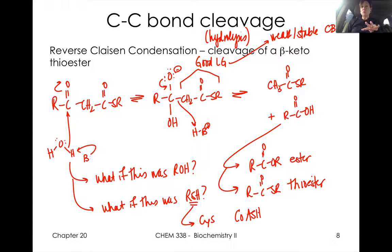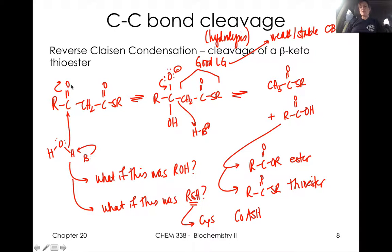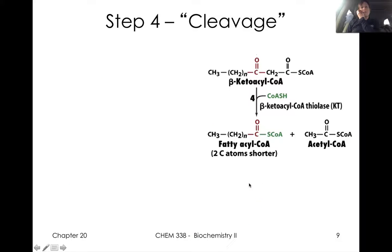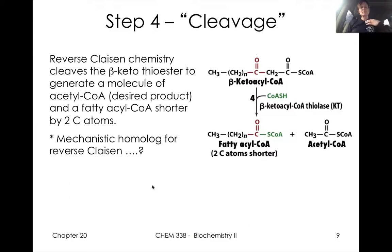We'll spend a good bit of time on this fourth step — this carbon-carbon bond cleavage — which is kind of new chemistry that we haven't seen before. We're going to review the mechanism for Claisen condensation and think about it in the reverse sense. When we have these beta-keto carbonyl compounds — in this case a beta-keto thioester — this carbon-carbon bond is what we call labile, easily broken. We'll talk about this chemistry in terms of an ester, then thinking about what if it were a thioester, so what we can see with acetyl-CoA.